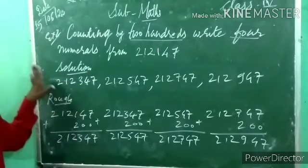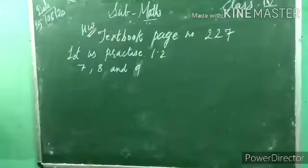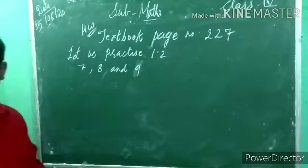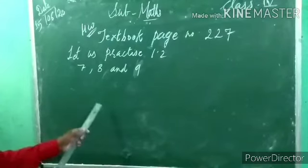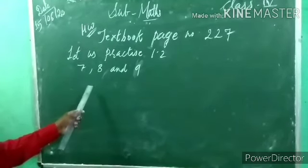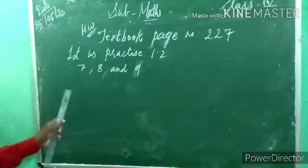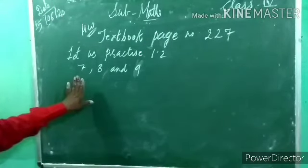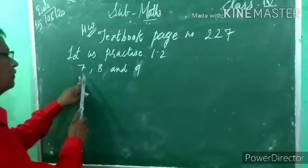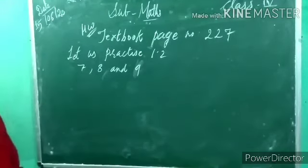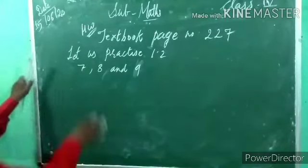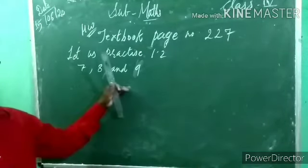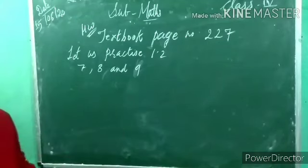Understood? Write down in your own book. Remember, textbook page number 227, Let Us Practice 1.2. Up to examples 1 to 6 you have already completed — I gave homework for that. Today homework is examples 7, 8, and 9. One more example, number 10, I will teach in the next session. So only 3 examples today, all based on skip counting.